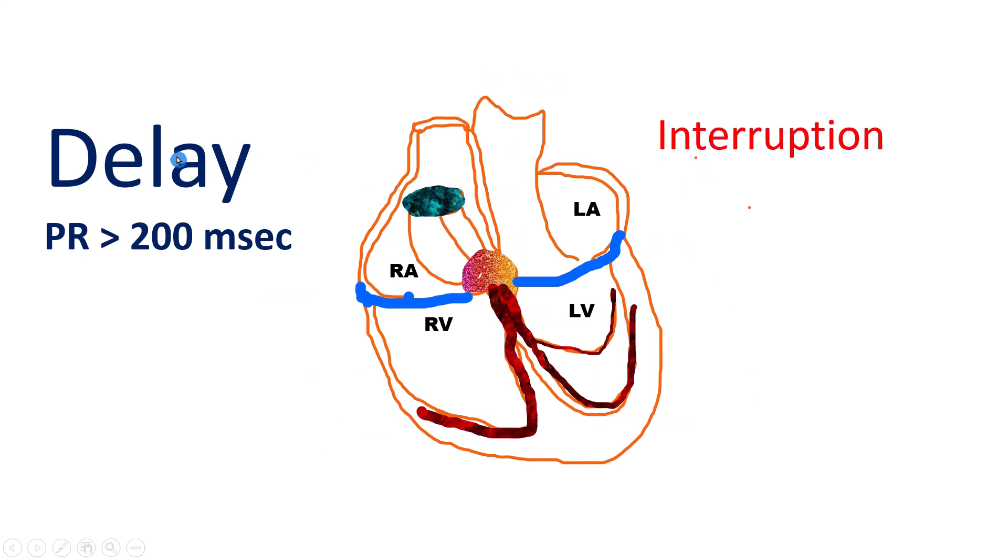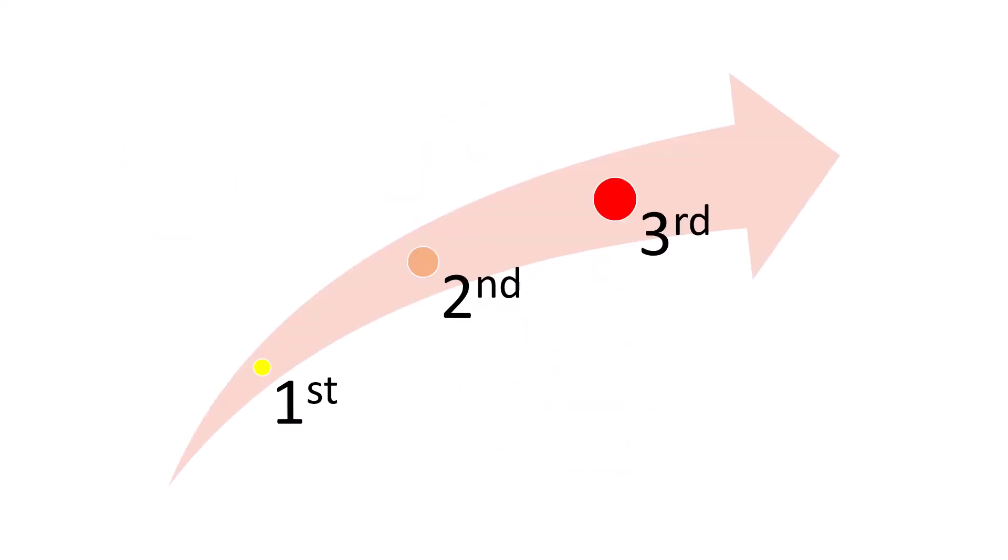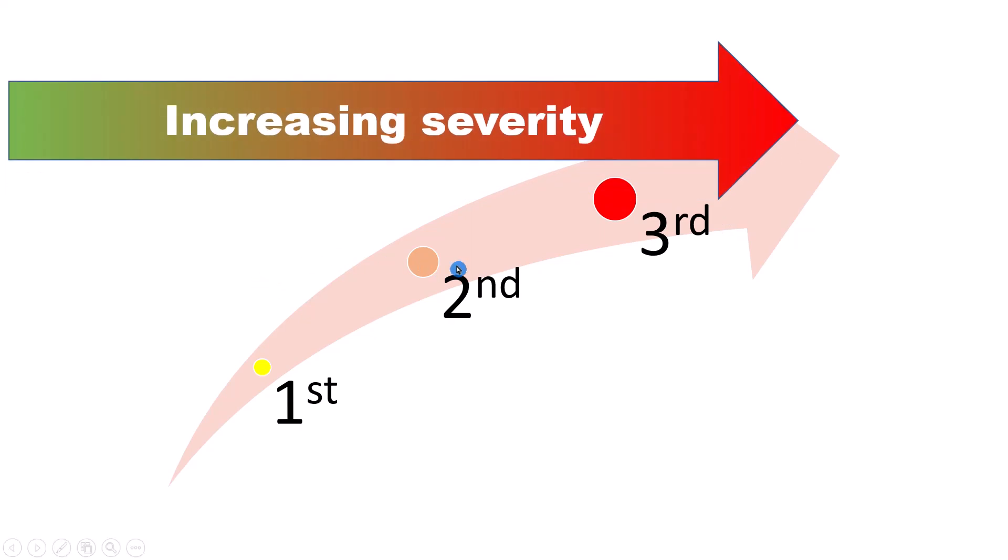There are three types of atrioventricular block based on increasing severity of conduction impairment: first degree, second degree, and third degree AV block.